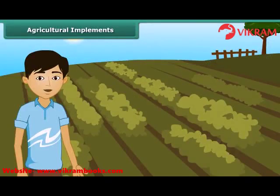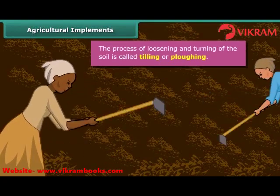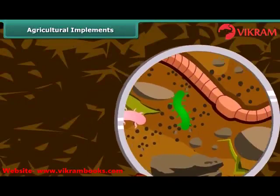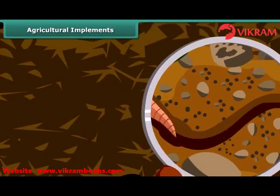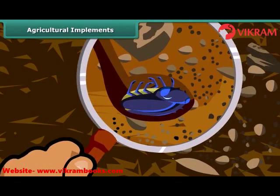Dear friends, do you know how farmers grow crops in a large field? What is their first requirement? First of all, they prepare the soil for growing the crop. For that, they turn the soil and loosen it. The loosened soil helps in the growth of earthworms and microbes present in the soil. These organisms are also known as farmer's friends. They add humus to the soil. Turning and loosening of soil brings the nutrient-rich soil to the top, and these nutrients are then used by the plants.